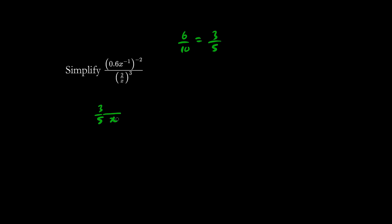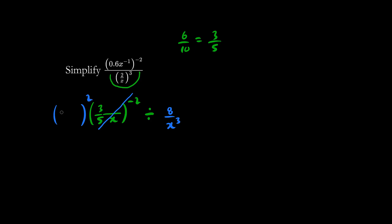x to the negative 1 puts the x on the denominator. And we have this whole thing all to the negative 2. We're dividing by the bottom part, which happens to be 2 cubed over x cubed — that is, 8 over x cubed. If we change this part to a positive exponent, we flip the top and bottom.